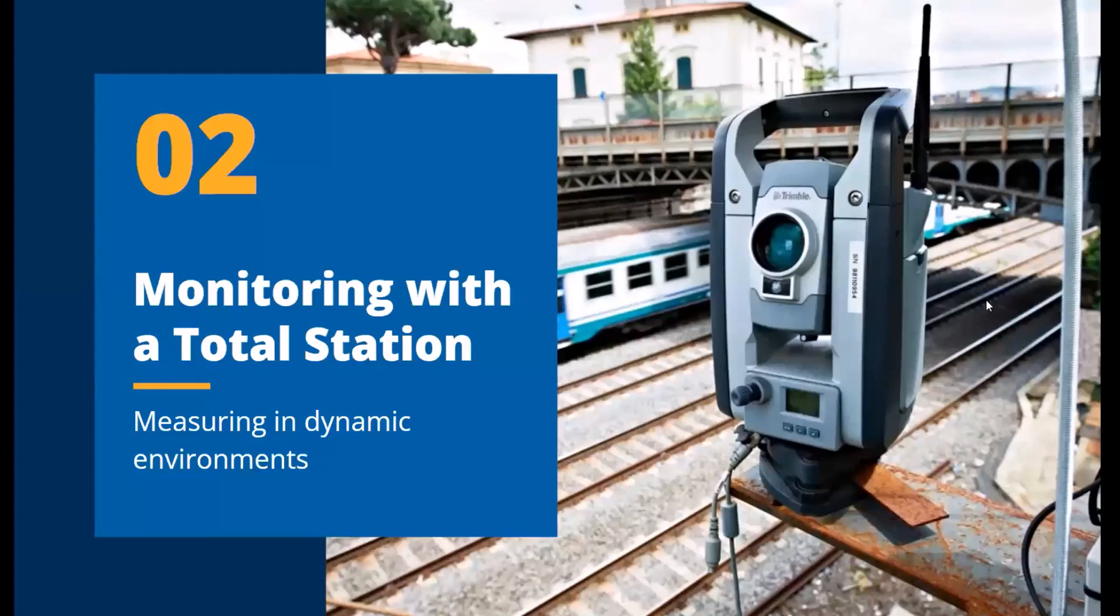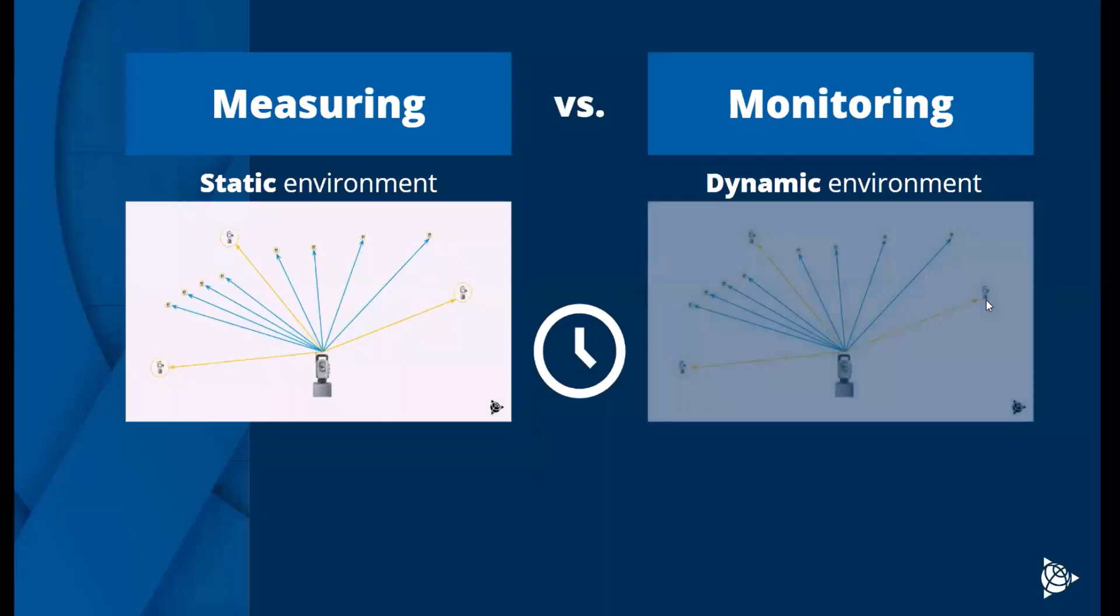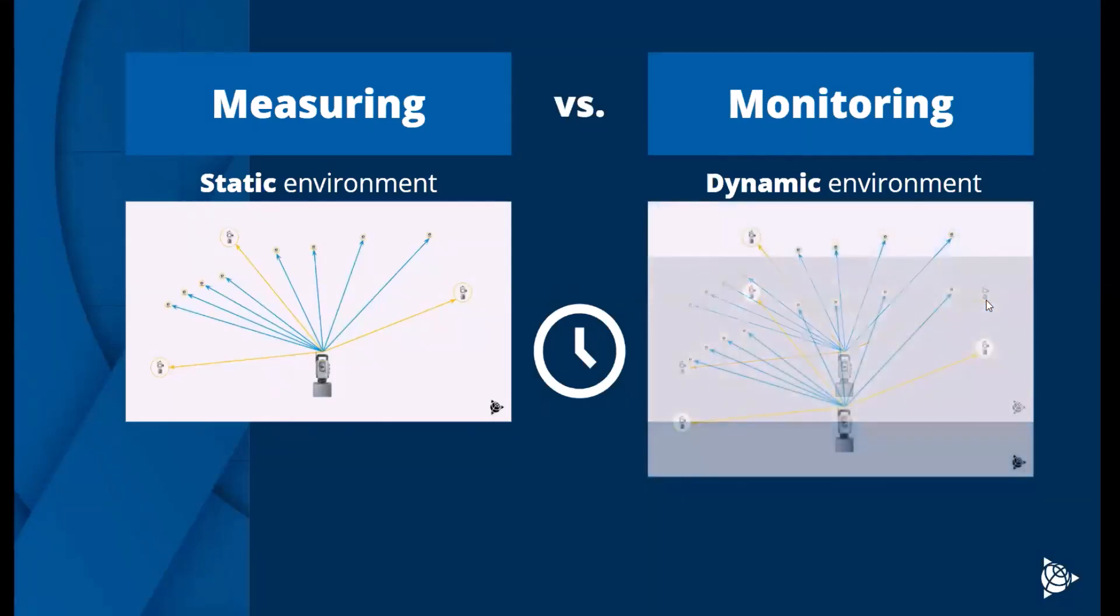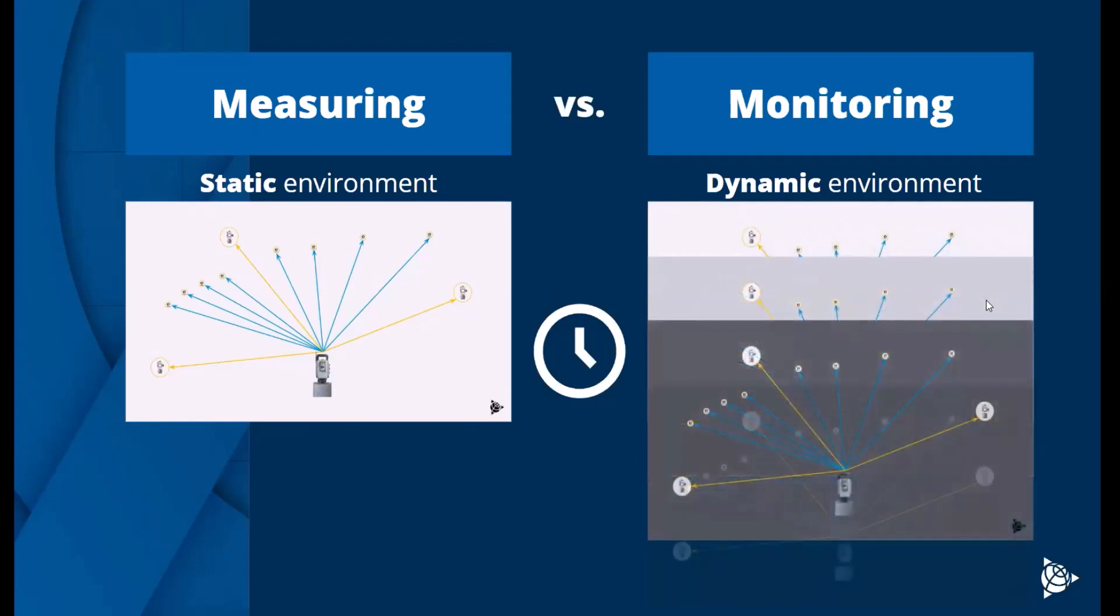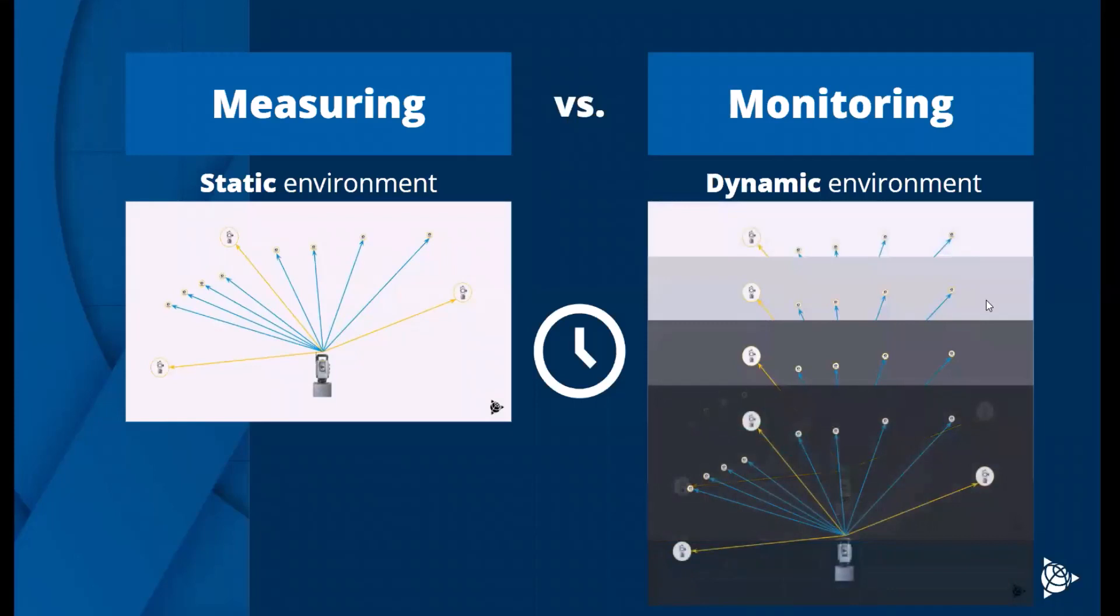Now getting into what monitoring looks like with a total station. The setup we just saw is really measuring in a static environment because we're taking a single snapshot in time. It's a single set of atmospheric conditions, one set of backsites, one set of monitoring prisms, and it's just one moment in time.